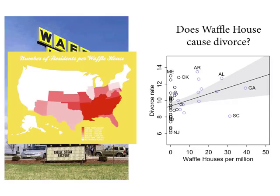Waffle House started in Georgia in recent history and has grown organically out of Georgia over time. Right now it's still mainly a southern phenomenon, as shown by the map of the density of Waffle Houses. Georgia has the most — 40 Waffle Houses per million people — which is reassuring in some sense. South Carolina also has a lot, Alabama, and so on.